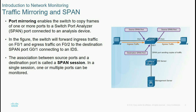Traffic mirroring, or SPAN port mirroring, enables the switch to copy frames from one or more ports to a Switch Port Analyzer (SPAN) port connected to an analysis device. The switch forwards the traffic of F1 and F2 to the destination SPAN port, connecting to an IDS. This is called a SPAN session; in a single session, multiple ports can be monitored.